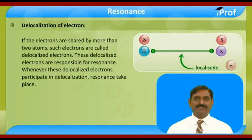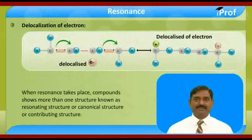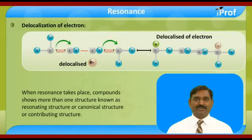Whenever these delocalized electrons participate in delocalization, resonance takes place. When resonance takes place, compounds show more than one structure. These structures are known as resonating structures, canonical structures, or contributing structures.